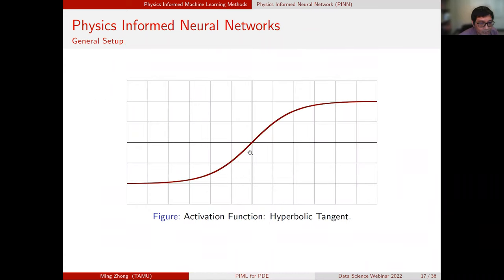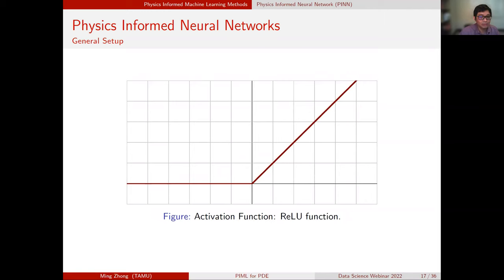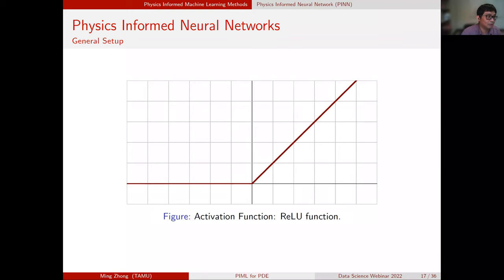The hyperbolic tangent activation function is a C-infinity function with a large derivative at zero, symmetric about the origin — it produces smooth, nice output functions. The ReLU (rectified linear unit) activation function is continuous but has a discontinuous derivative: it is zero for negative inputs and linear for positive inputs. ReLU is a good choice when you know the solution has a discontinuous derivative.